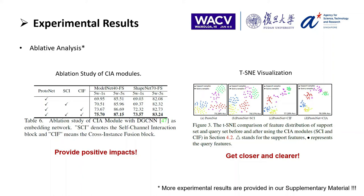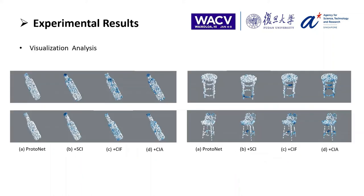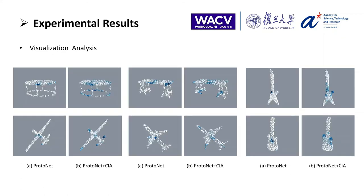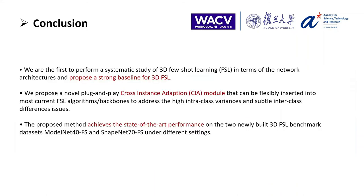More experimental results are provided in our supplementary material. To provide more insight analysis, we further visualize the feature heat maps. We observe that the SCI module pays more attention to different local parts, such as the cap of a bottle and the legs of a chair, while the CIF module can activate in more diverse regions. As a result, the CIF module can highlight more discriminative parts and structures, which enriches the information learned from point cloud instances.